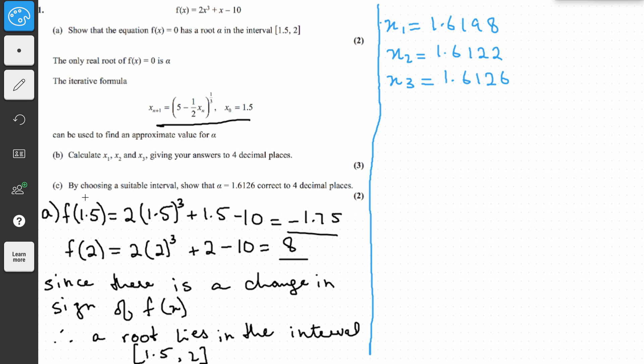Now in part c, by choosing a suitable interval, show that alpha equals this correct to 4 decimal places. So we usually choose an interval. For example, this is given to 4 decimal places, so we choose an interval which is to 5 decimal places.